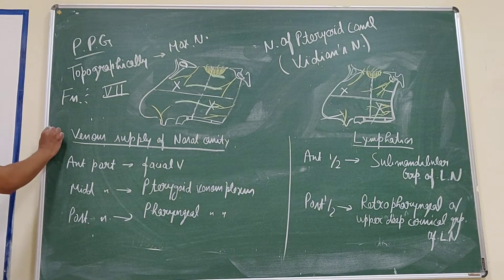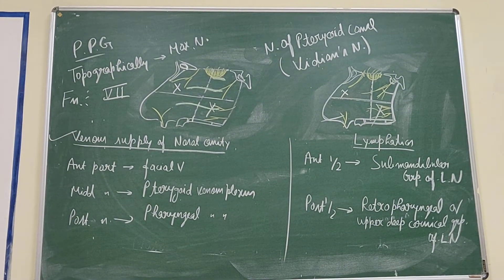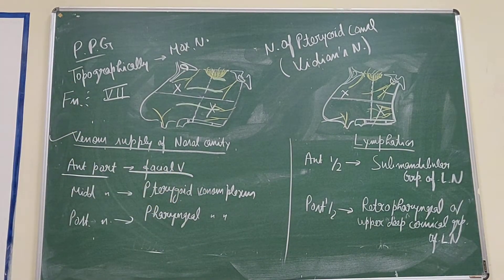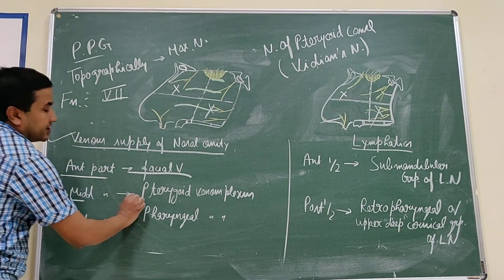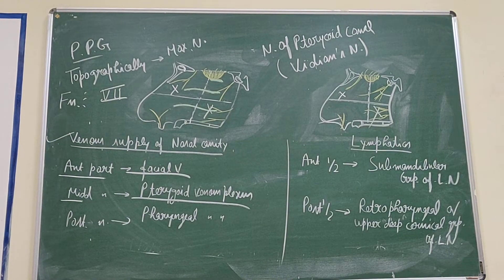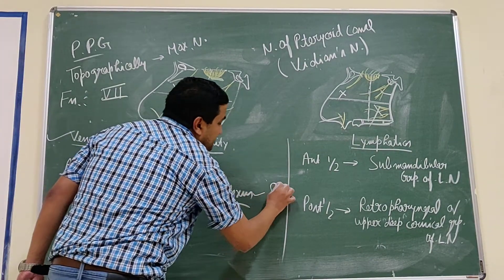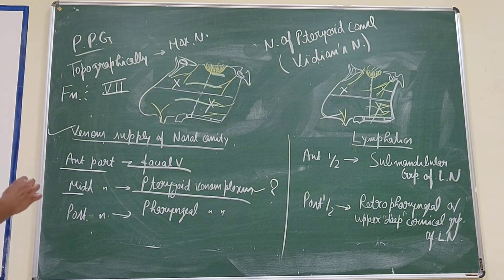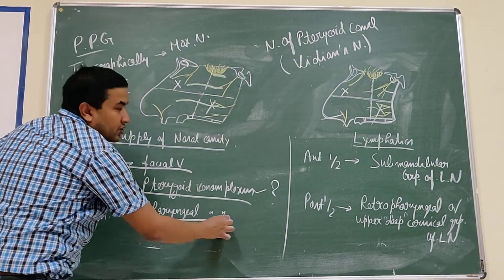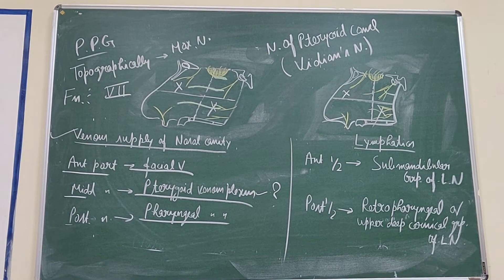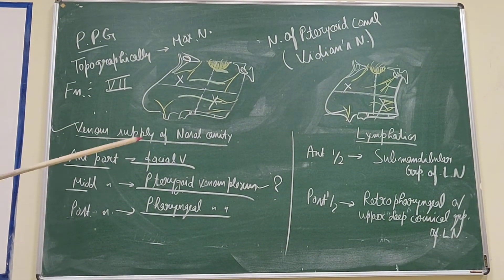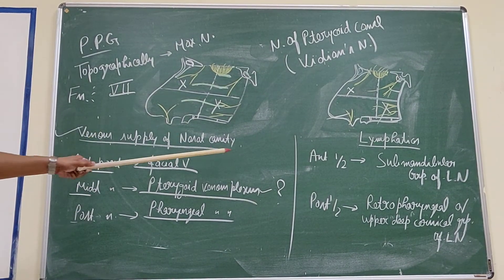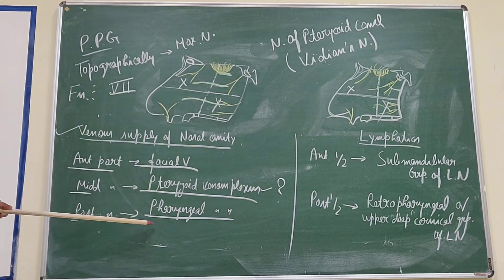Now the venous supply. The venous supply of the nasal cavity: the anterior part drains into the facial vein, while the middle part drains into the pterygopalatine venous plexus, and the posterior part — towards the nasopharynx — drains into the pharyngeal plexus of veins.